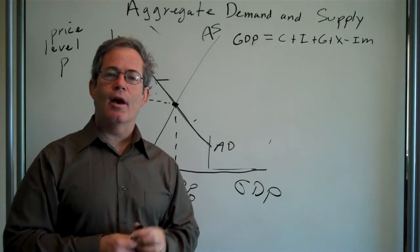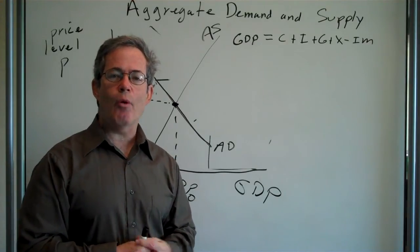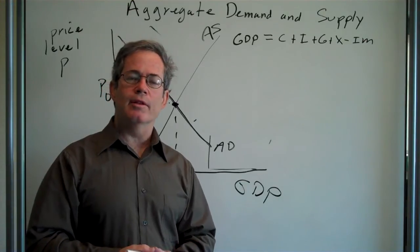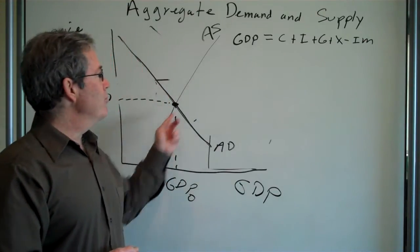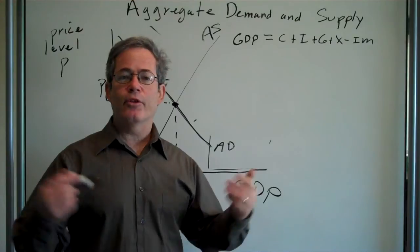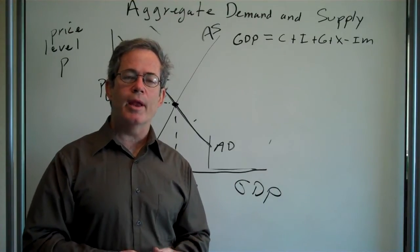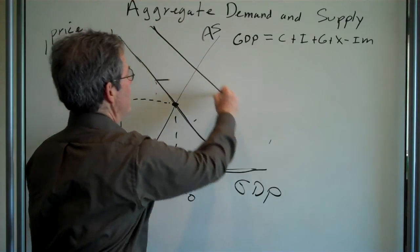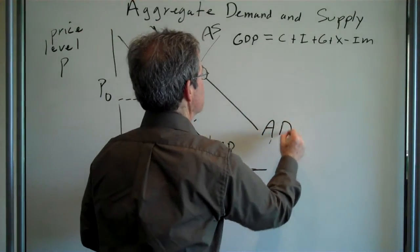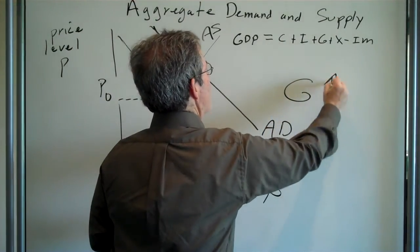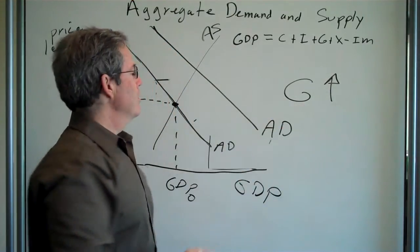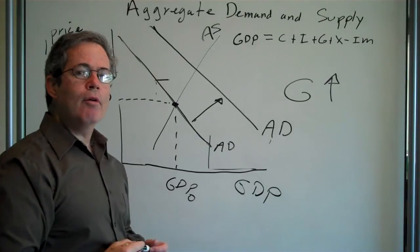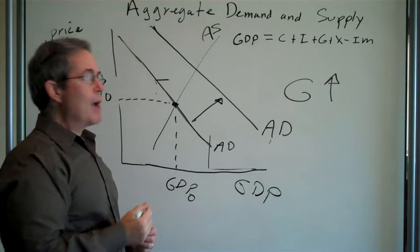Now, let's see what happens under certain scenarios. First of all, we've already talked about what will happen if the government spends more money. Let's do that again now that we've put in aggregate supply. So let's say the government spends more money in order to get the economy out of a recession. So if government expenditure goes up, the aggregate demand curve shifts out.